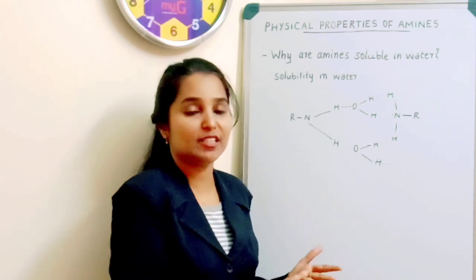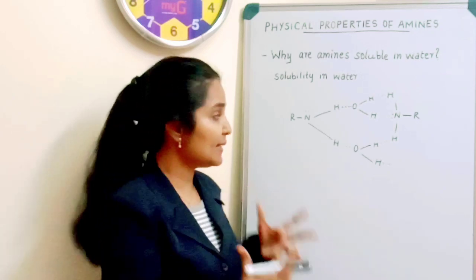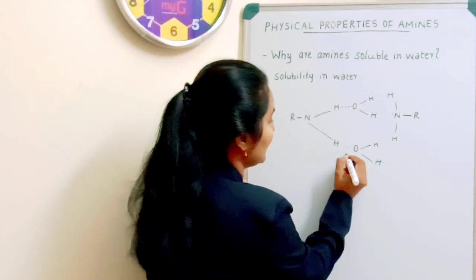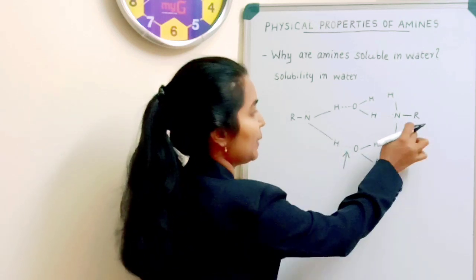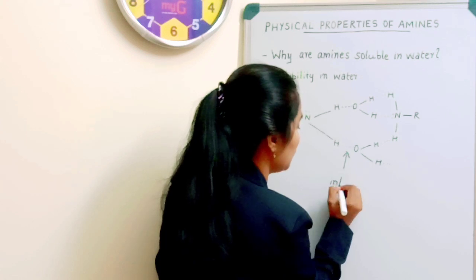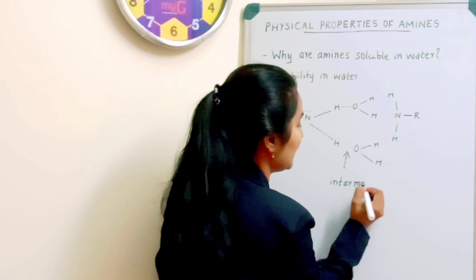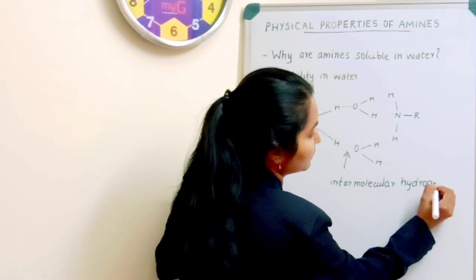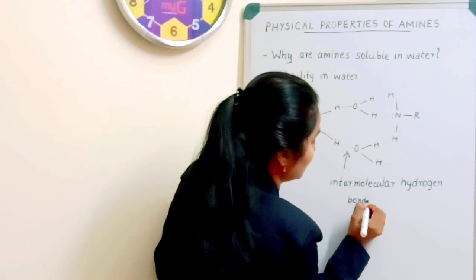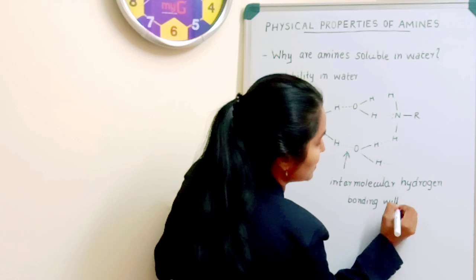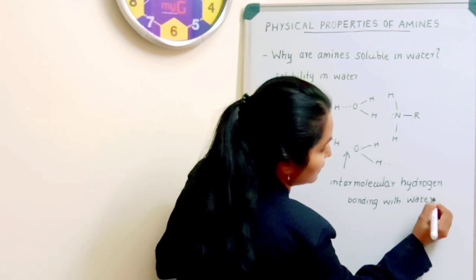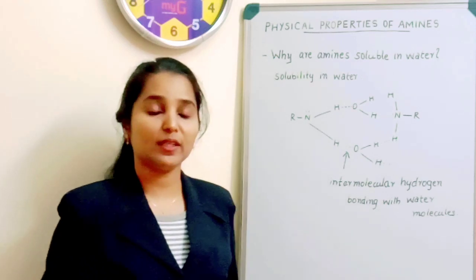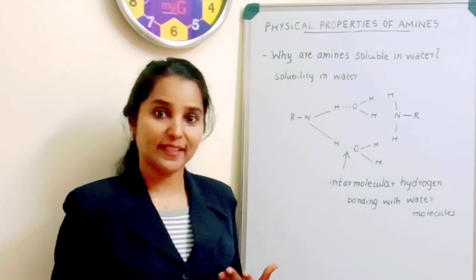So amines are able to make a hydrogen bonding with water. Intermolecular hydrogen bonding with water. These are the intermolecular hydrogen bonding. You can see here amine, water, amine. Intermolecular hydrogen bonding. That is the answer. Amines are soluble in water because they are able to form intermolecular hydrogen bonding with water molecules.